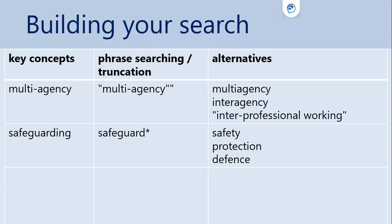Multi-agency could be the phrase as two words, or it could be one word — multiagency. We could also use inter-agency or inter-professional working. Notice that I've put speech marks or quotation marks around the phrase 'multi-agency' and 'inter-professional working.' Speech marks are a powerful search tool that can be used on most search engines, including library search. It focuses the search engine to search for the phrase — the two or more words together — rather than the individual terms, making the search more specific and finding more relevant results.